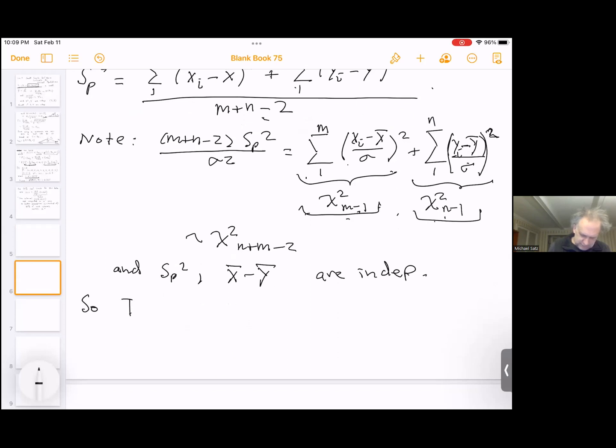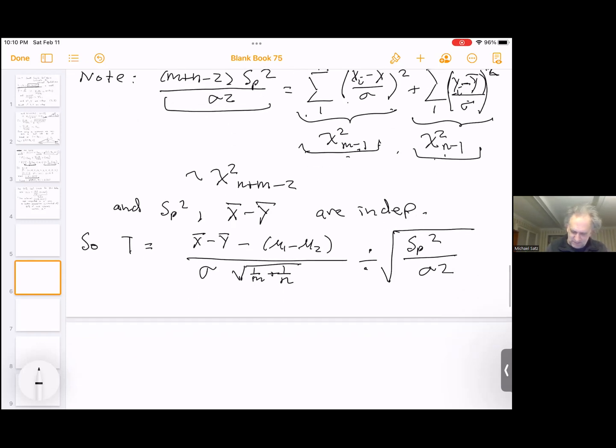So t should be set equal to x bar minus y bar minus mu1 minus mu2 over sigma square root 1 over m plus 1 over n, standard normal, and independent of this chi squared, so I can divide by the square root of this chi squared divided by its degrees of freedom. So this is just sp squared over sigma squared. Once I divide, the sigma squareds cancel again. The square root hits the sp, and we get t equals x bar minus y bar minus mu1 minus mu2 all over sp square root 1 over m plus 1 over n.